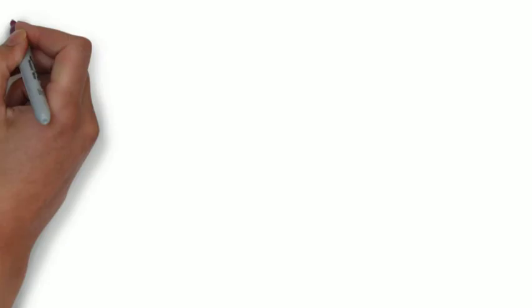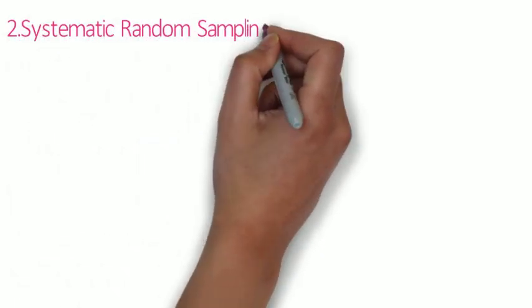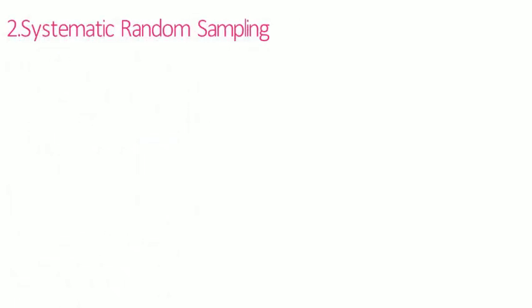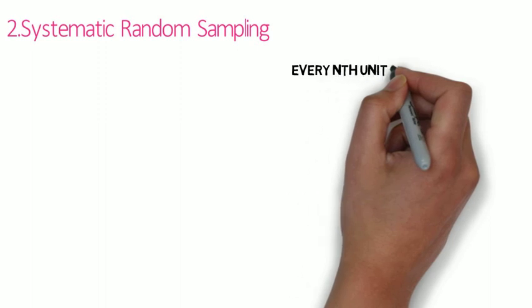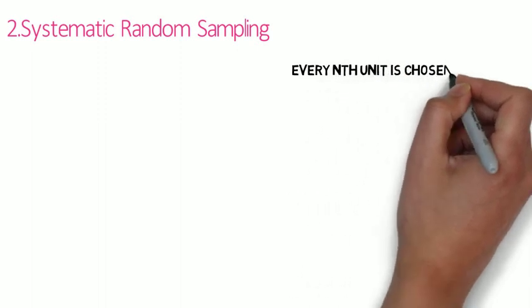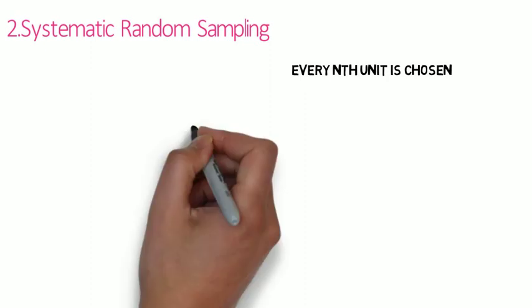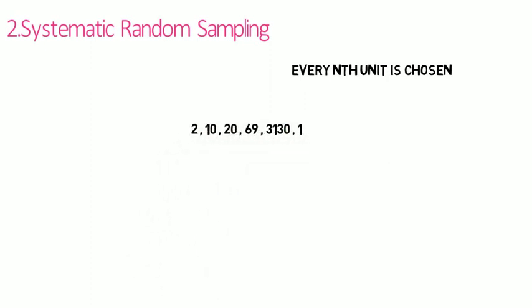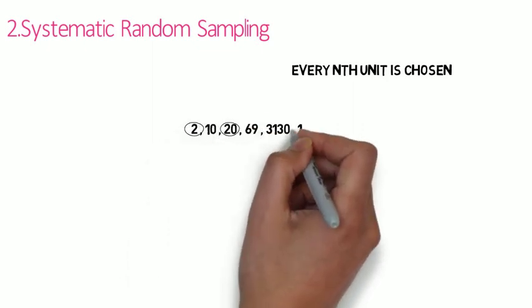Next, systematic random sampling. Here, every nth unit is chosen as the sampling interval. So from the entire population, if I choose every second number, then those selected values form the sample.